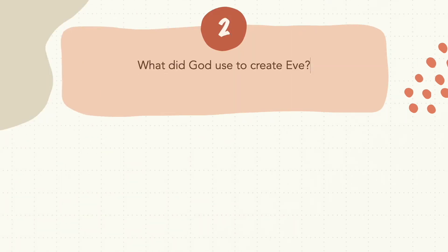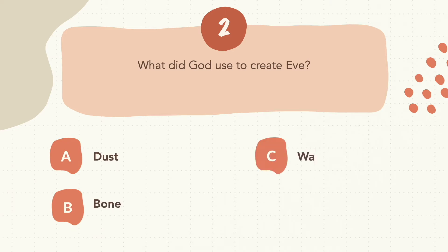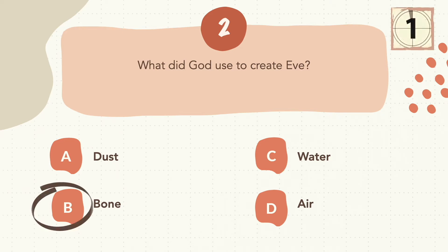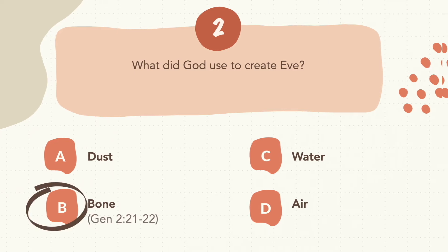Question 2: What did God use to create Eve? The correct answer is B, bone.